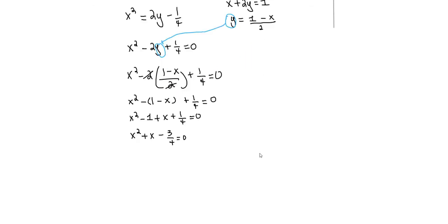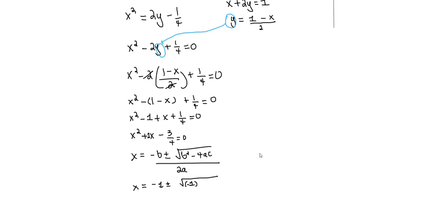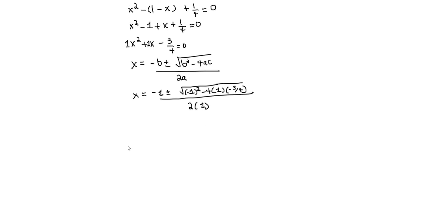We apply the quadratic formula: x equals negative b plus or minus square root of b squared minus 4ac, all divided by 2a. Here b is 1, so it's negative 1 plus or minus square root of 1 squared minus 4 times a, which is 1, times c, which is negative 3 over 4 — all divided by 2 times 1.